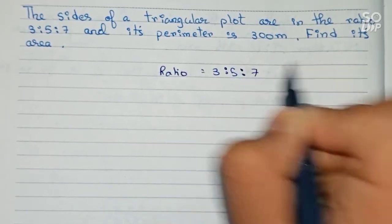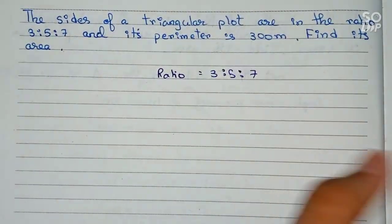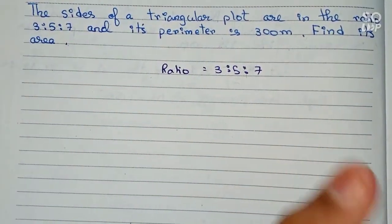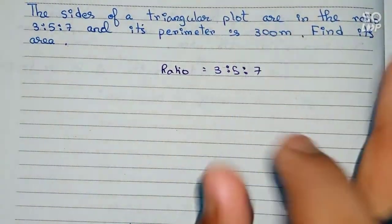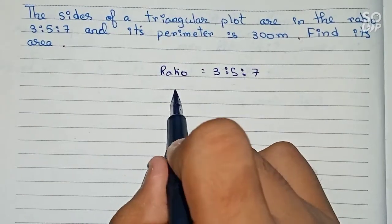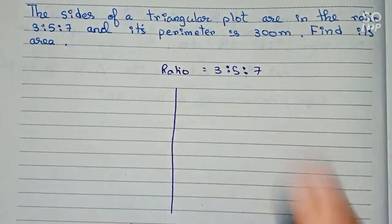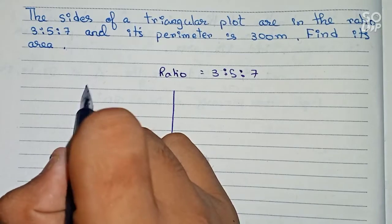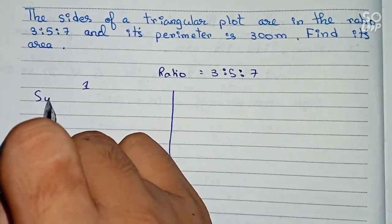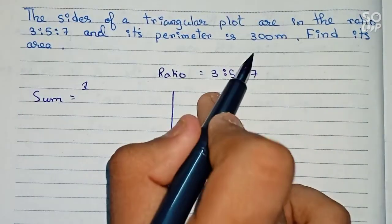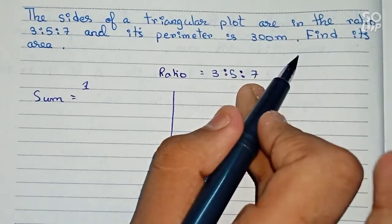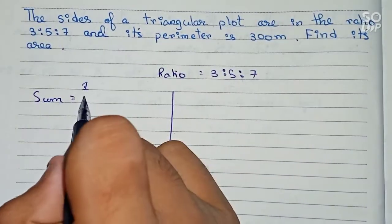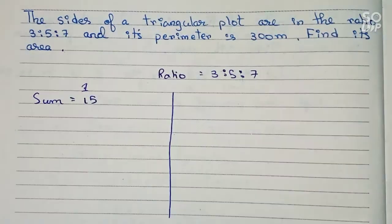Now we will find out all three sides of the triangle. We can do that by two processes, and I will show both. Process number one: first find the sum of ratios. So 3 plus 5 plus 7 — 7 plus 5 equals 12, and 12 plus 3 equals 15. So the sum of ratios is 15.